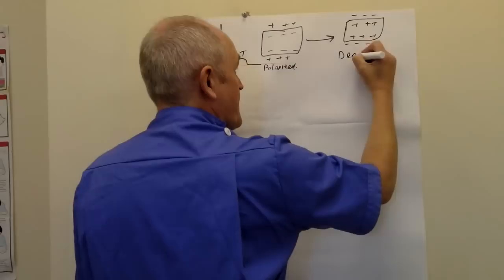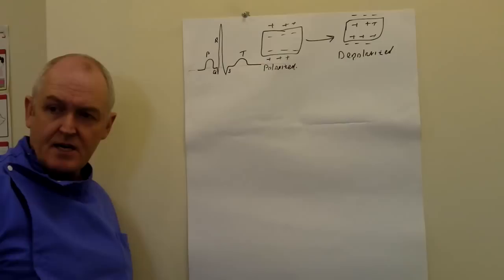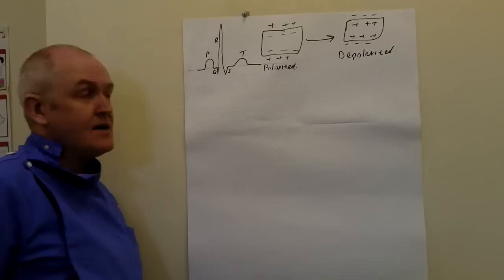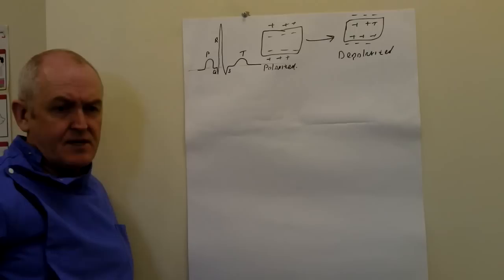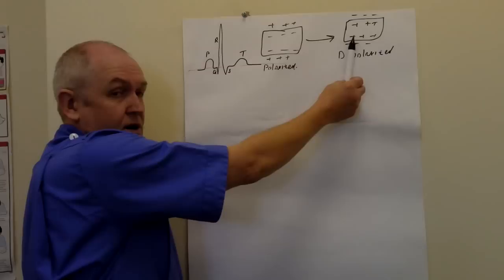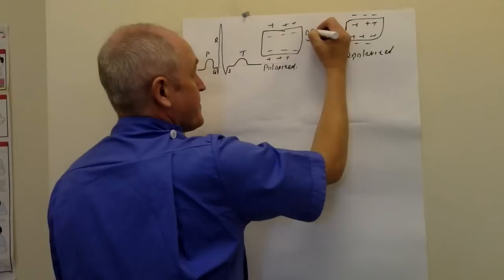So in this state, the cell is depolarised. Ions — charged atoms — will alter their distribution across the membrane, reversing the polarity inside the cell and outside. And when a muscle cell depolarises in health, it will contract. So depolarisation will be associated with contraction.